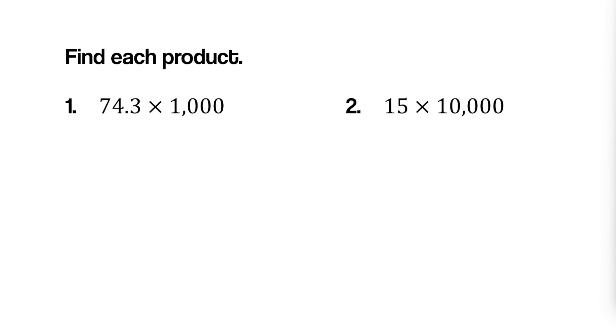Let's practice with these examples. First, 74.3 times 1000. Since 1000 has three zeros, move the decimal point three places to the right.